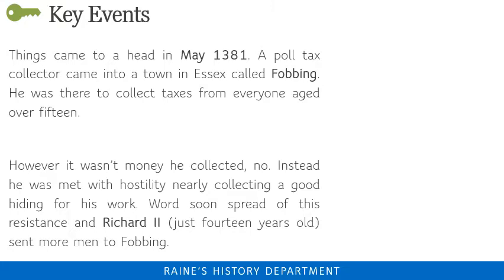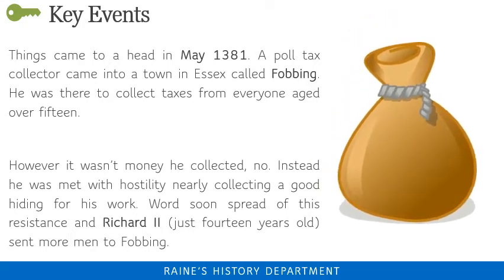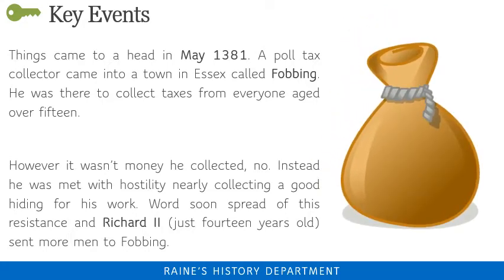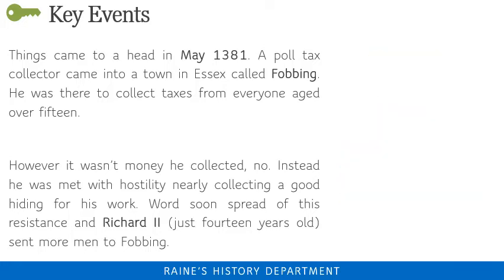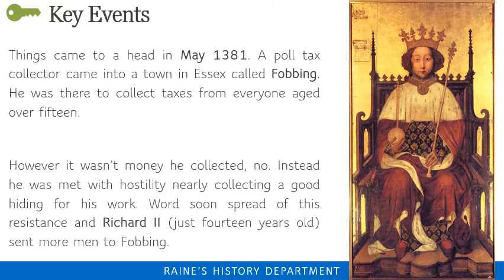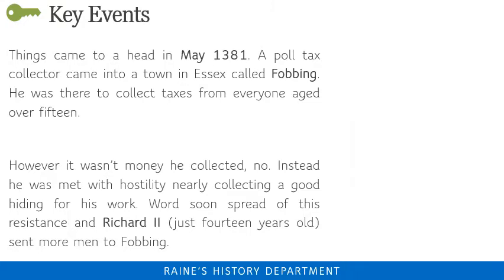Things came to a head in May 1381. A poll tax collector came into a town in Essex called Fobbing, there to collect taxes from everyone over the age of 15. However, he was met with hostility — nearly collecting a good hiding for his work. Word soon spread of this resistance, and Richard II, just 14 years old, sent more men to Fobbing. Again they were met with fierce resistance, and soon villagers from all over the southeast of England set off on a march to London, demanding an audience with the king.